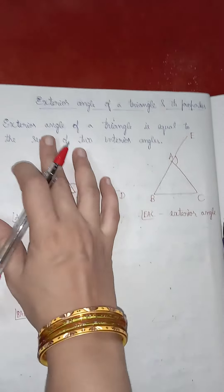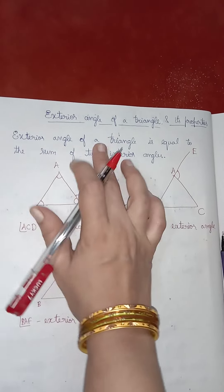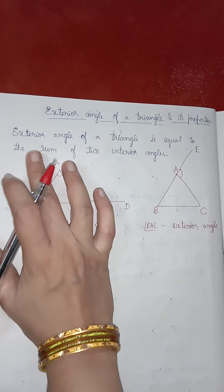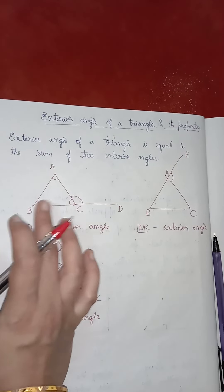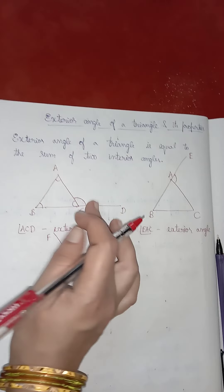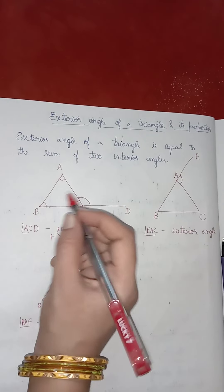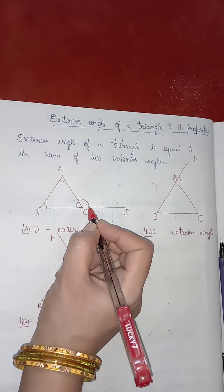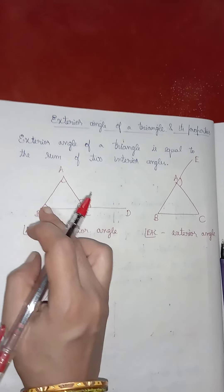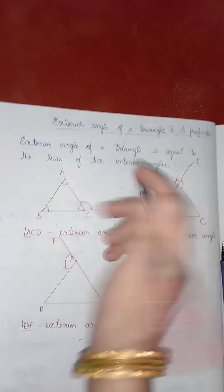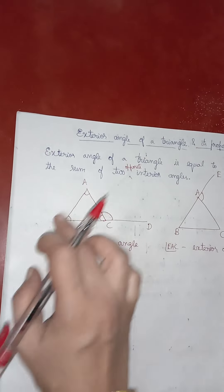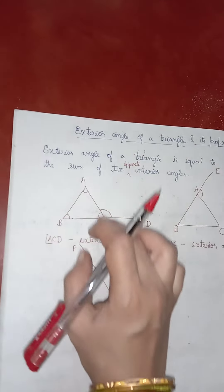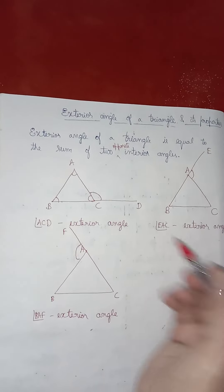The property says that the exterior angle of a triangle is equal to the sum of two interior angles opposite to it. For angle ACD, the two opposite interior angles are angle ABC and angle BAC.